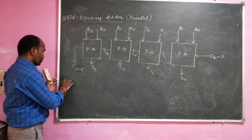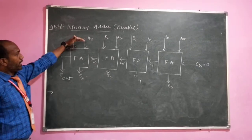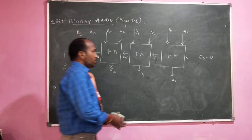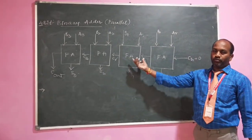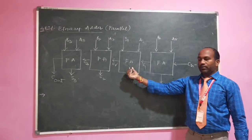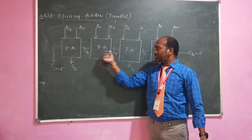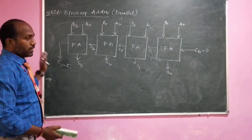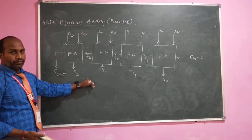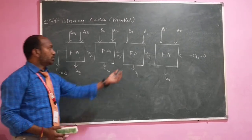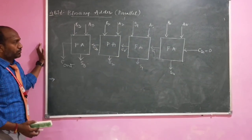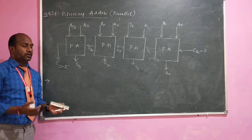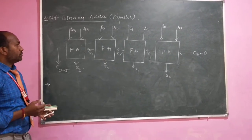The main disadvantage of this design is that even though two numbers A and B are supplied simultaneously at the beginning, you do not get the output at the same time, because each full adder must wait for the carry from the previous stage. With many stages, this causes significant propagation delay, since the carry propagates one stage at a time.